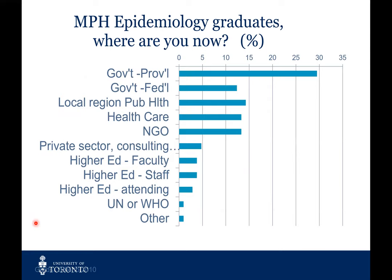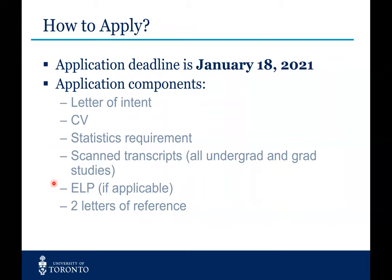This graph gives you an idea of where our graduate students end up. A lot of them end up working for government at the provincial, federal, or local public health level. Private sector consulting is a growing area. And then we do have those who go on and pursue higher education. I'm going to stop there for a moment and take questions. If you have any questions about the program — not about the application, as I'll go over that next — put your question in the chat.